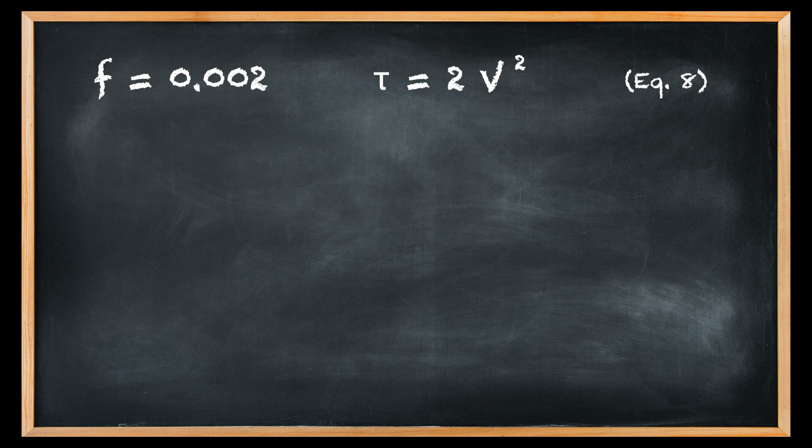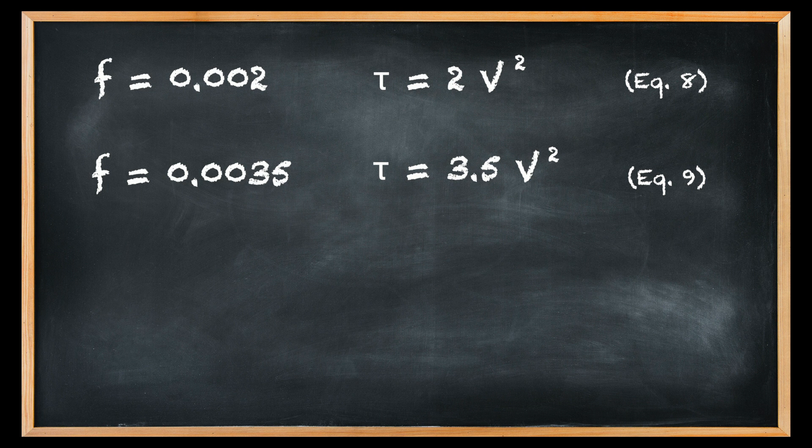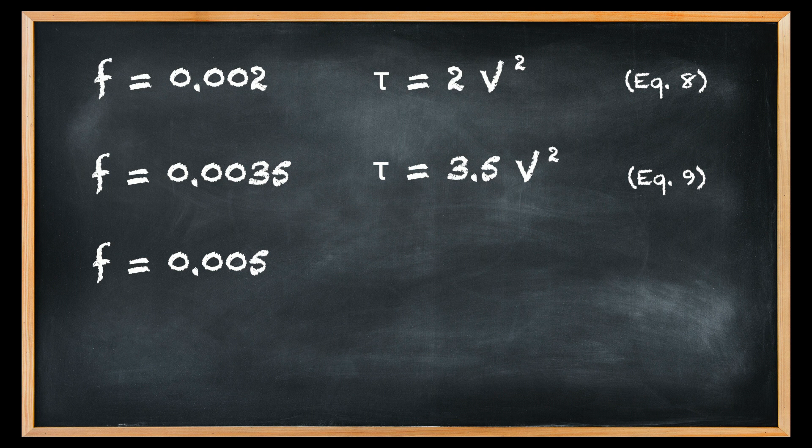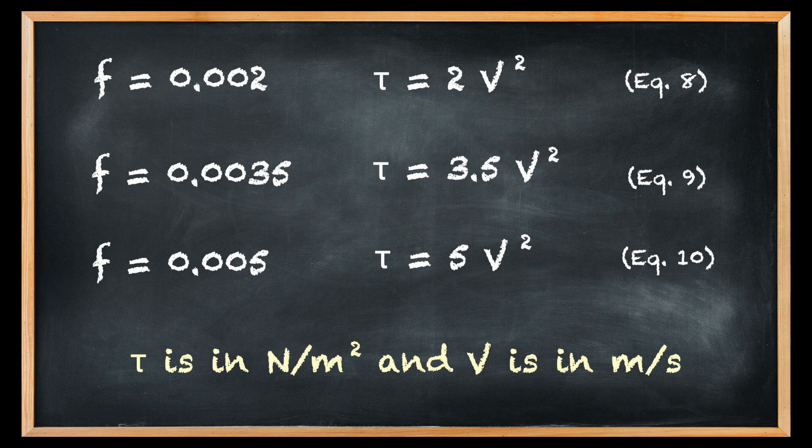For the low value f equals 0.002, for the average value f equals 0.0035, for the high value f equals 0.005, in which τ is in newtons per square meter and V is in meters per second.